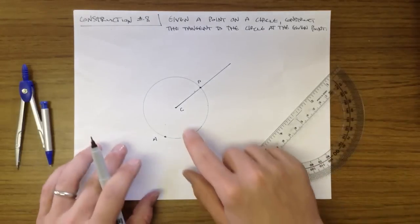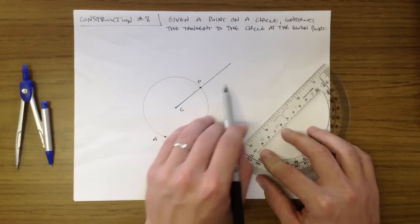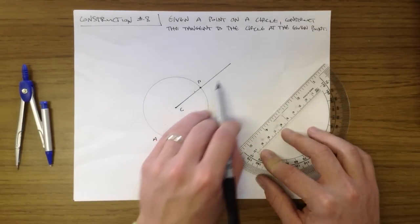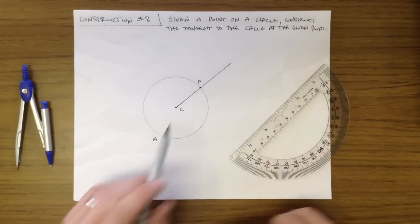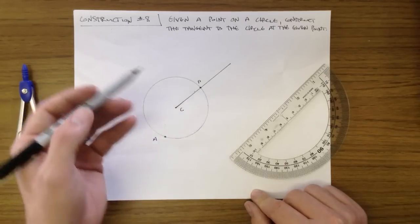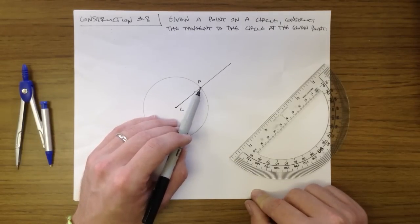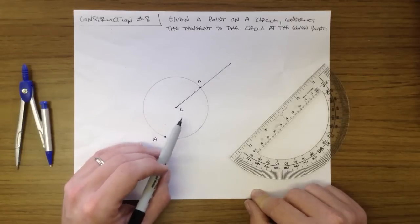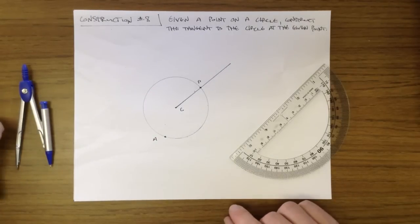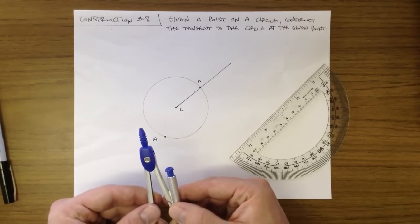So what you'll do is you'll draw a line here that goes from the center of your circle through your point of tangency. And then we know or we want to construct the line that's perpendicular to point P on this line. So you're going to be using the basic constructions that we were using before.